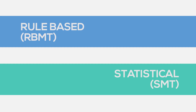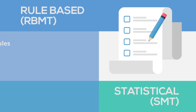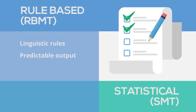Rule-based machine translation, or RBMT, engines use linguistic rules to break down the content. It produces more predictable output for terminology and grammar through the use of customized terminology lists to fine-tune the engine and the ability to correct every error with a targeted rule. Rule-based engines don't need a large and structured set of texts, also known as a bilingual corpus, to create the translation system.